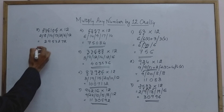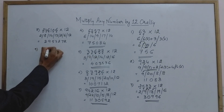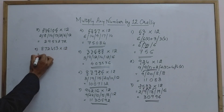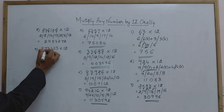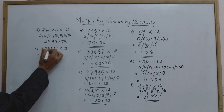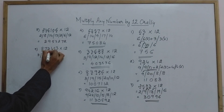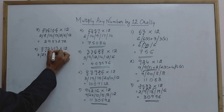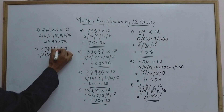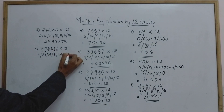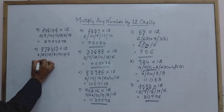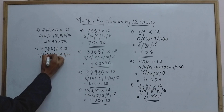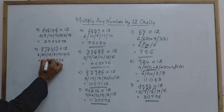Ninth example: 872453 × 12. Starting with 8: double of 8 plus 7 = 23; double of 7 plus 2 = 16; double of 2 plus 4 = 8; double of 4 plus 5 = 13; double of 5 plus 3 = 13; double of 3 = 6. Writing the answer: 6, then 13 gives 4 with 1 carry; 9 with carry; 16 gives 6 with 1 carry; 24 gives 4 with 2 carry; 10 gives 0 with 1 carry; final digit. The answer is 1049484.